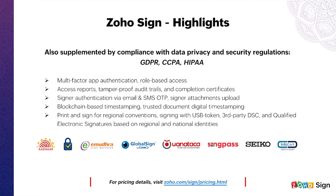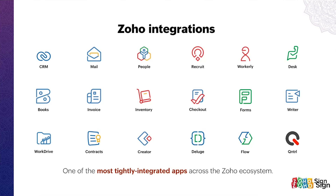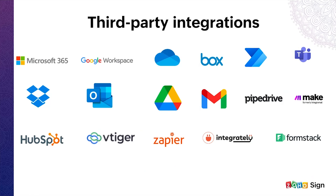These tamper-proof features will help you in making sure that the intended person has only signed the document. Accessing your documents across platforms is important in today's hybrid work environment. Zoho Sign has native mobile and desktop applications available across popular platforms such as Android, iOS, iPadOS, macOS and Windows. Zoho Sign not only integrates with Zoho apps but also with popular apps such as Dropbox, Google Drive, OneDrive, Microsoft Teams, Outlook, HubSpot, Pipedrive and over 50 other popular applications. We also offer integration with no-code workflow tools such as Zoho Flow, Zapier and Microsoft Power Automate, allowing you to automate digital signature collection and workflow.